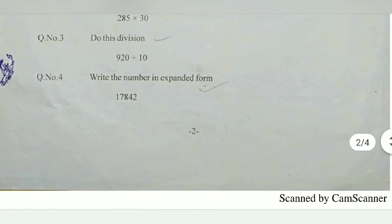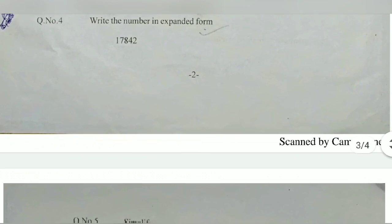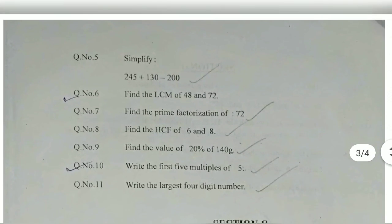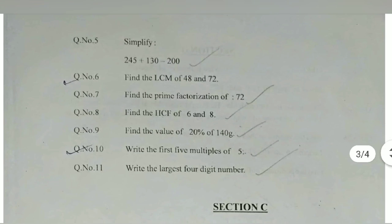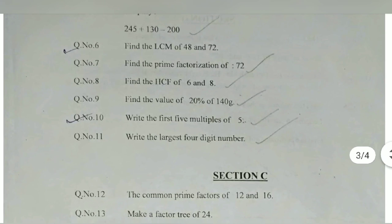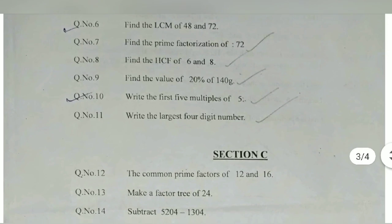The next question is coming. Division and multiplication do carefully. Number five simplify the answer: 245 plus 130 minus 200. Add addition first and subtraction second.